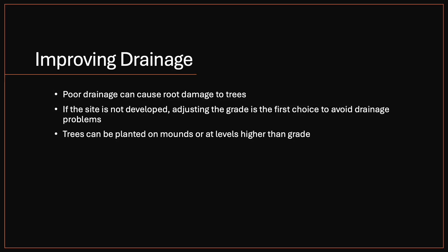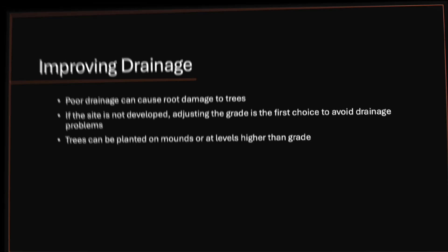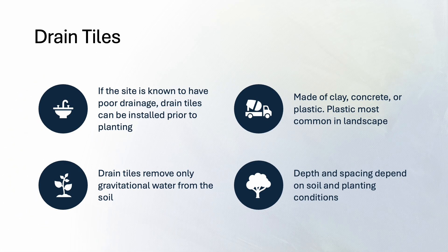If poor drainage is a concern at a site, there are ways to improve it: adjusting the grade before planting is obviously the best option. Planting trees on mounds can raise them above flooded conditions. You can also install drain tiles, which remove gravitational water from the soil. Tiles are made of clay, concrete, or plastic — most commonly plastic in landscape settings. Depth and spacing depend on soil and planting conditions.